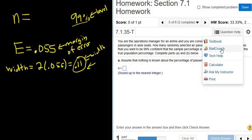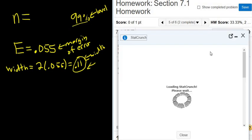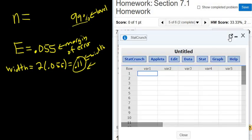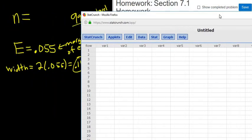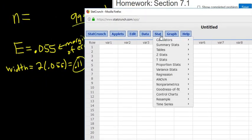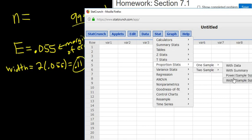So question help, StatCrunch. We go to stat, proportion stats, one sample. And we're given the width, and we're looking for the sample size. So width, sample size.